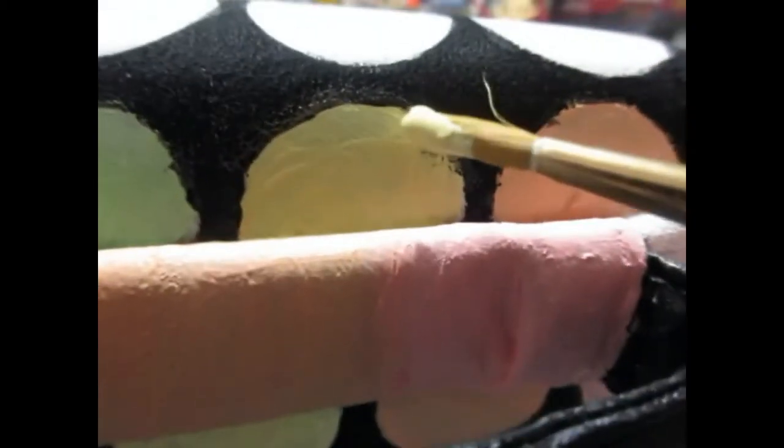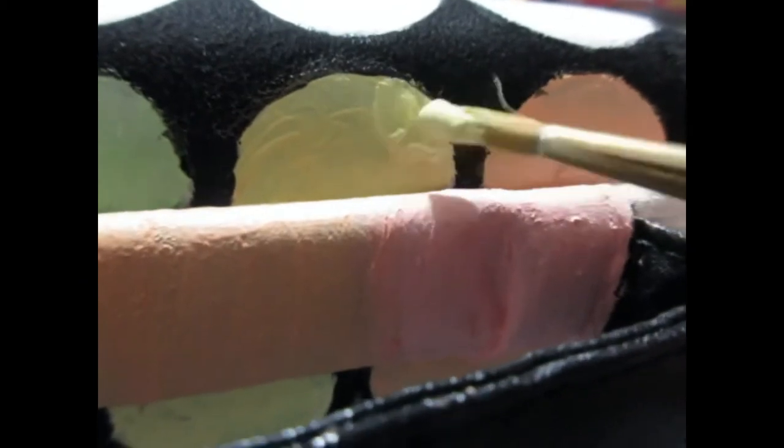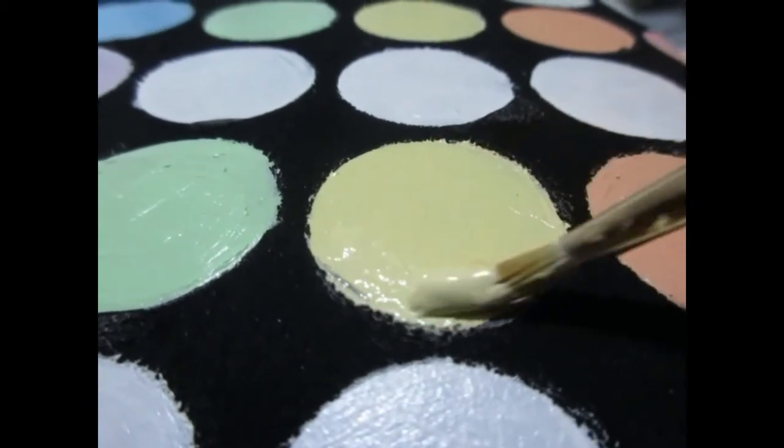Once I did that now I'm just going back in with color and touching up inside of the circles where black paint got inside to make it look neater. Then I'm taking that same black paint and touching up the handle.